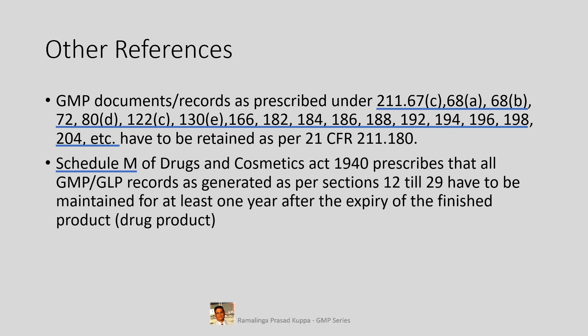Schedule M of the Drugs and Cosmetics Act 1940 prescribes that all GMP and GLP records generated as per sections 12 through 29 have to be maintained for at least one year after the expiry of the finished product — the drug product. Section 12.4 prescribes that records and associated standard operating procedures shall be retained for at least one year after the expiry date of the finished product.